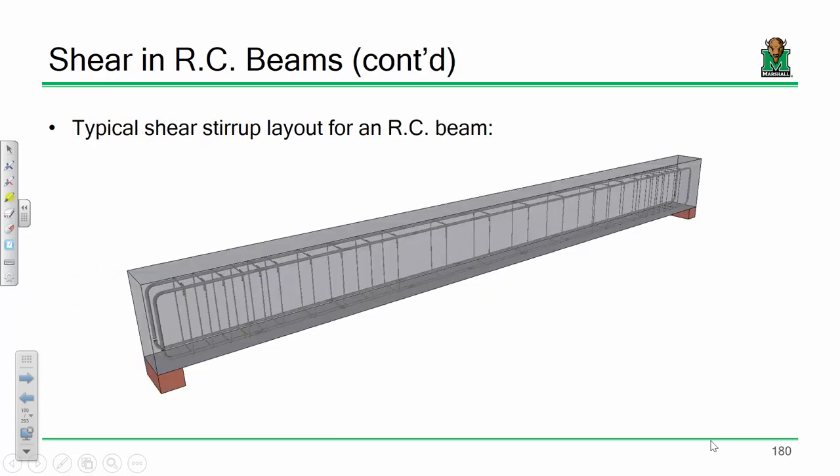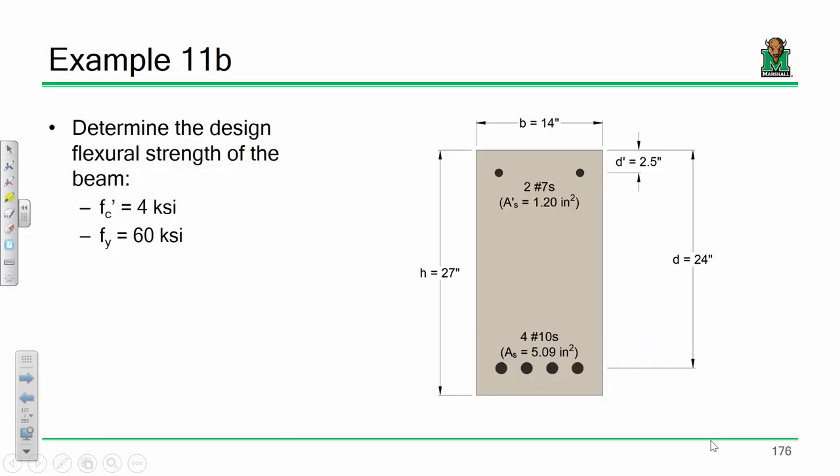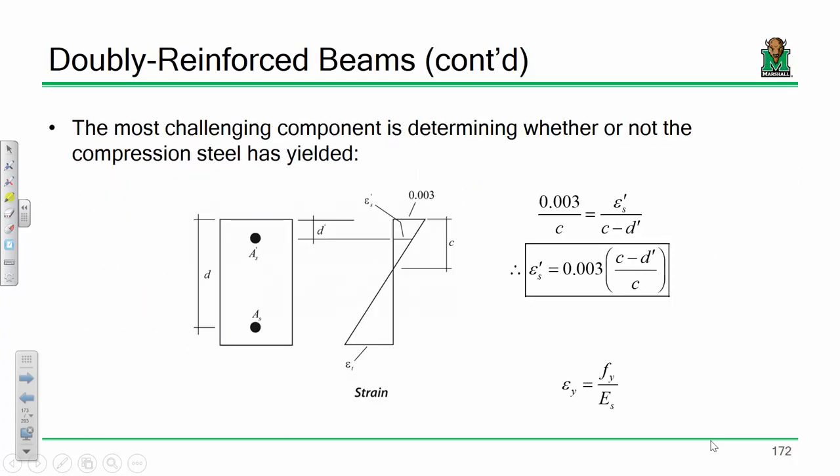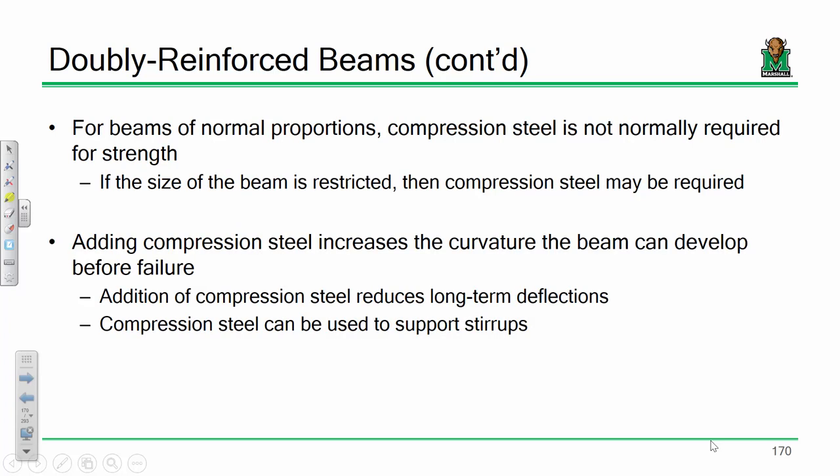But the idea is, I've got this tensile reinforcement on the bottom, and I've got all these stirrups along the beam. And so generally, it's common to throw a few bars in up top to tie the whole thing together, to tie what we call the rebar cage together. So why would you include compression steel in your analysis? Because it's generally there anyways. It's generally there to tie together all of the rebar inside the section. So the first reason is that it's there.